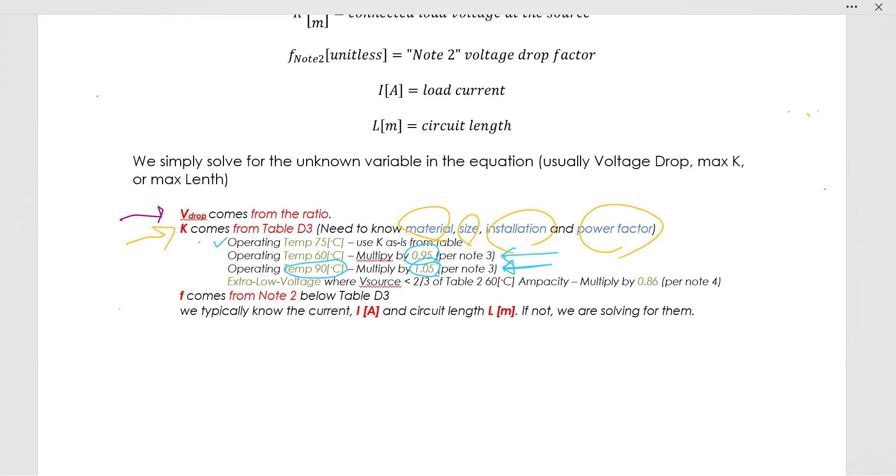If the voltage drop came from a ratio, K came from an easy table. If the temperature is 75 degrees, we keep it as it was from the table. If we're at operating temperature 60 degrees, multiply by 0.95. If it's 90 degrees, multiply by 1.05. And if it is extra low voltage, defined by the voltage source being less than two-thirds of table 2 60 degree Celsius capacity, then you multiply by 0.86. That is in note 4.